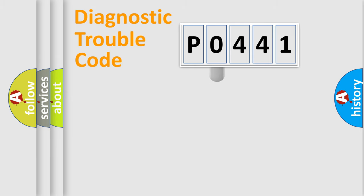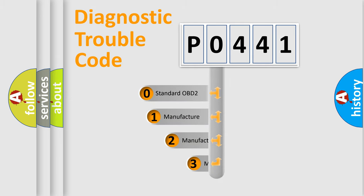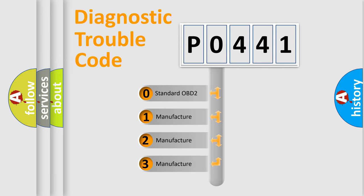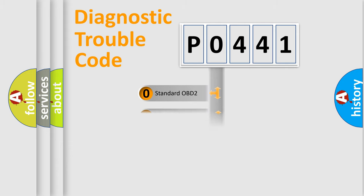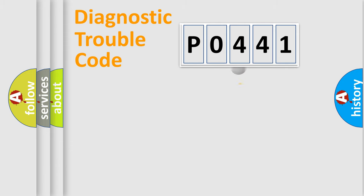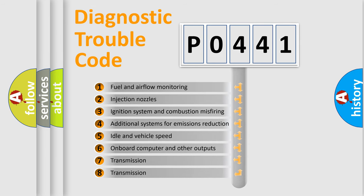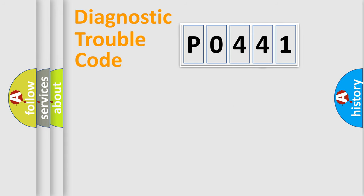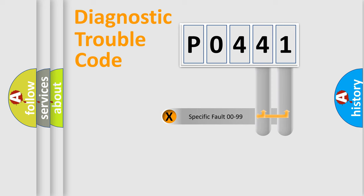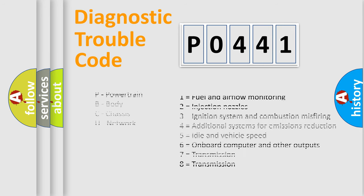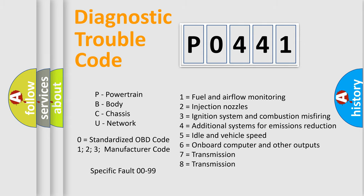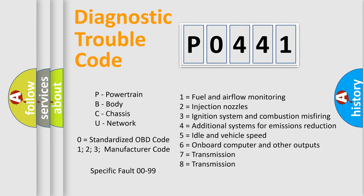This distribution is defined in the first character of the code. If the second character is expressed as zero, it is a standardized error. In the case of numbers one, two, or three, it is a more manufacturer-specific expression of the car error. The third character specifies a subset of errors. The distribution shown is valid only for the standardized DTC code. Only the last two characters define the specific fault of the group. This division is valid only if the second character code is expressed by the number zero.